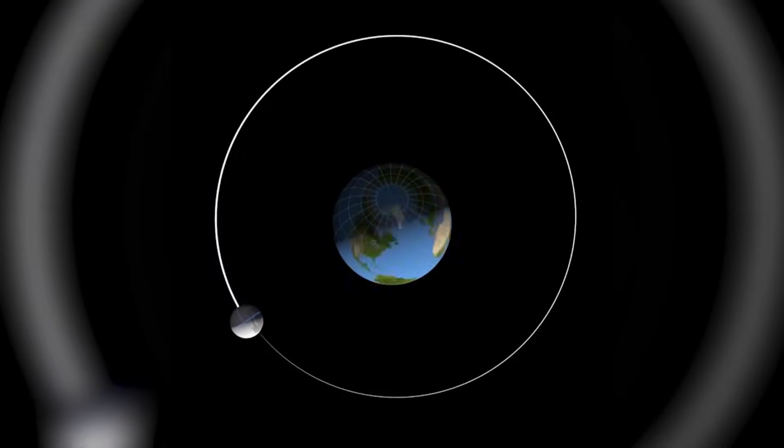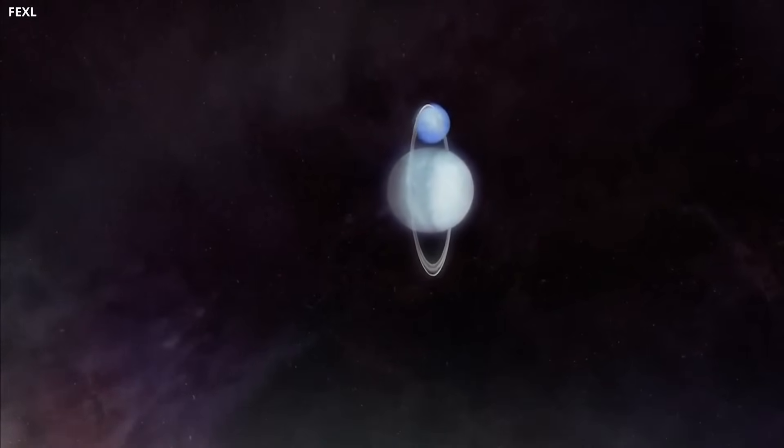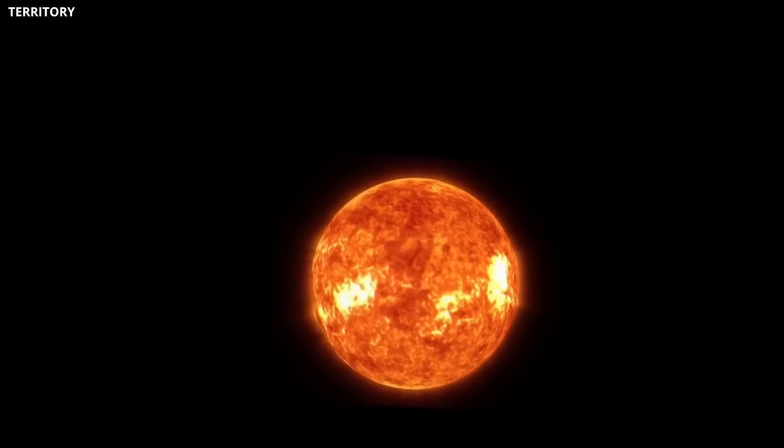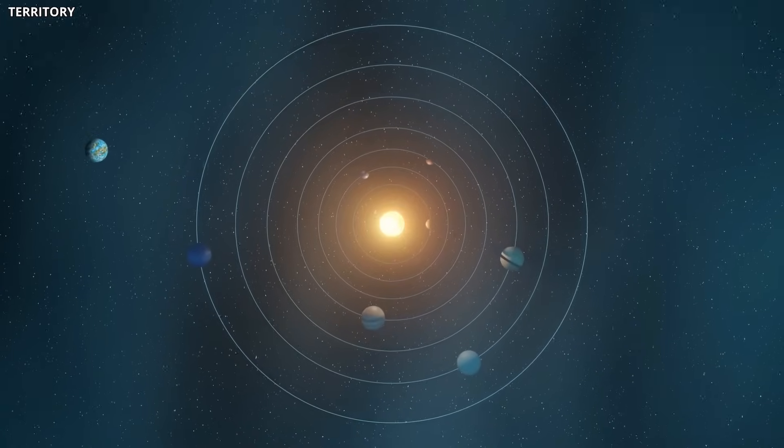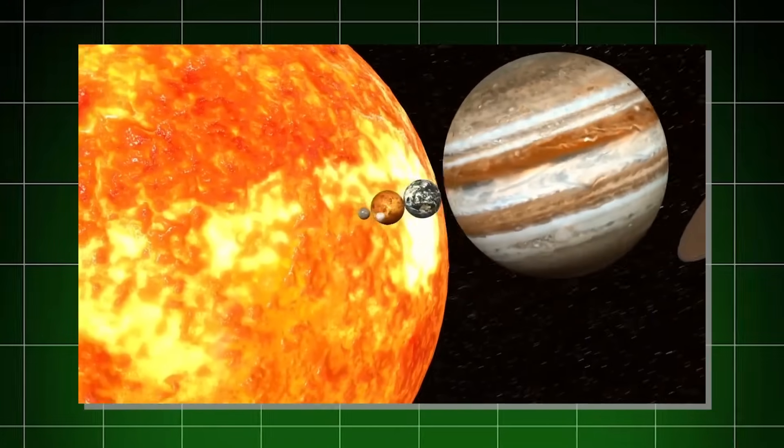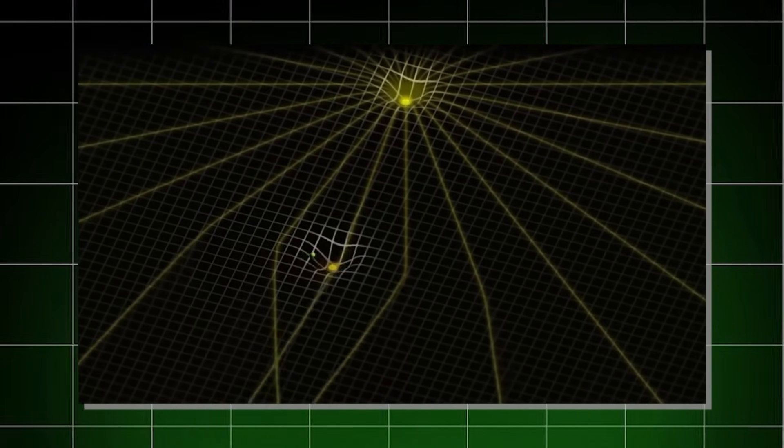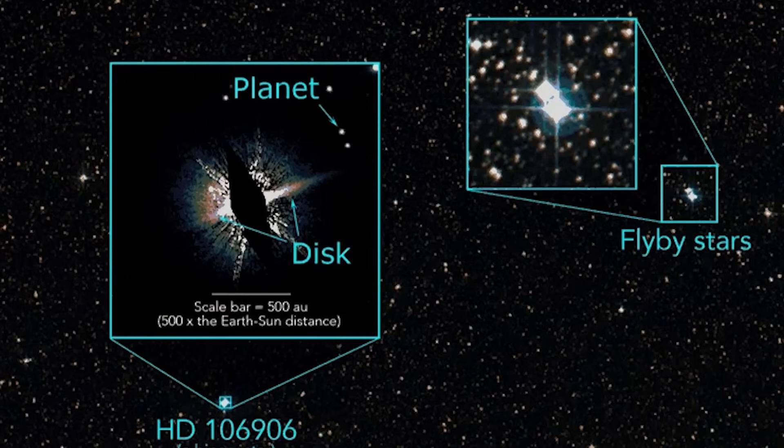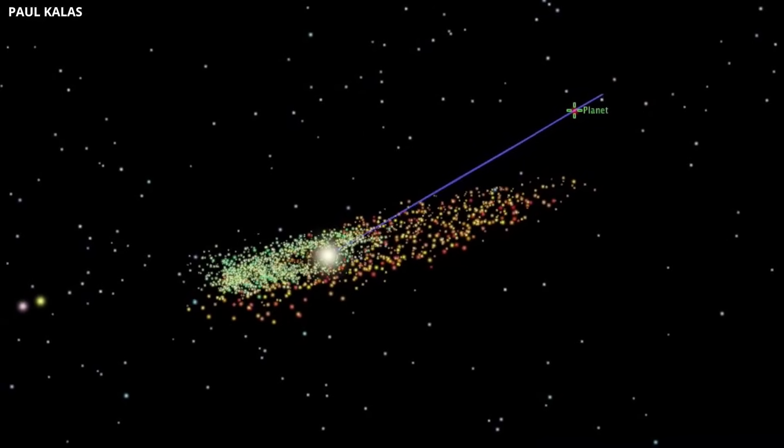Another possibility is that the orbits of these distant worlds were shaped long ago by something that's no longer there. Early in the Sun's life, our solar system was surrounded by many other young stars. One of them could have passed close by, its gravity pulling some of our icy bodies outward and stretching their orbits. This stellar flyby could leave the same kind of fingerprints we now see, without needing any big object to still be there.